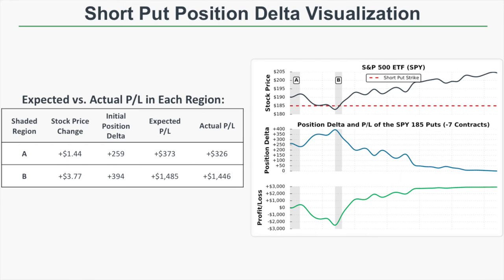In this visual, on the top we're looking at changes in the stock price, in the middle we're looking at the changing position delta over time — because delta is not static — and on the bottom we have the actual profit and loss of this position. In shaded region A, the stock price increased by $1.44. Based on our initial position delta of plus 259, our expected profit after a $1.44 increase is $373. Our actual profit from that movement was plus $326 — off by about $50, which is not much in the grand scheme of things.